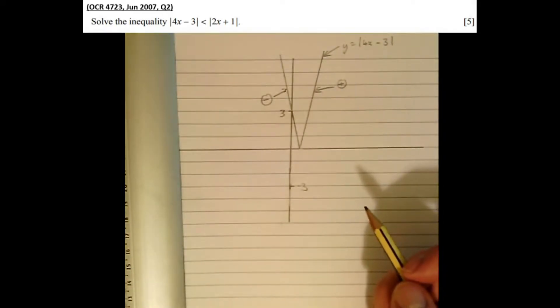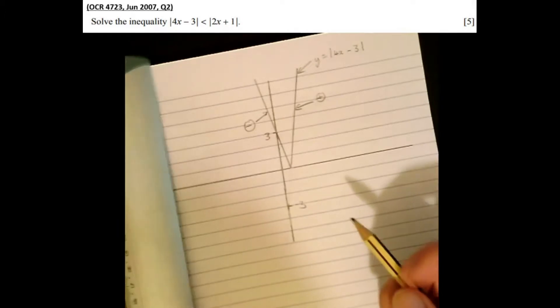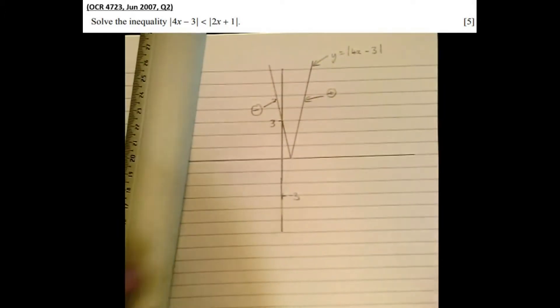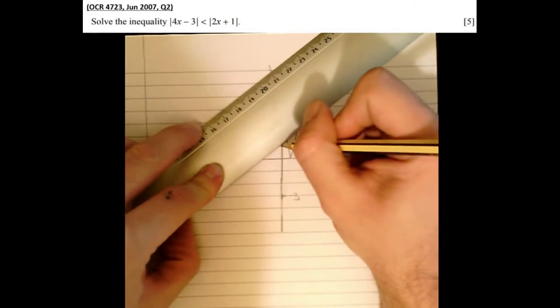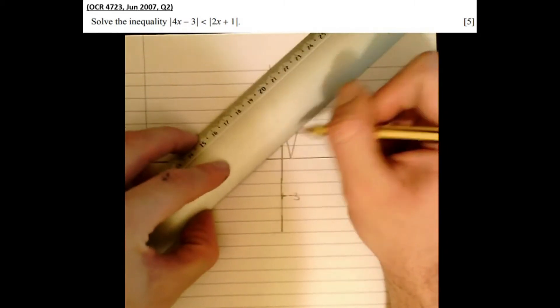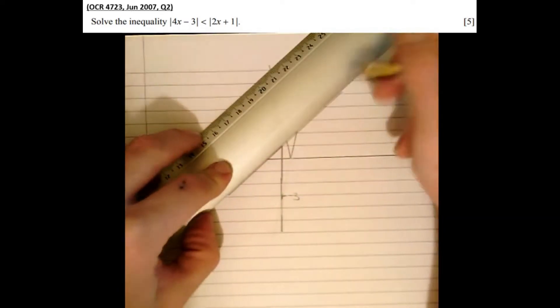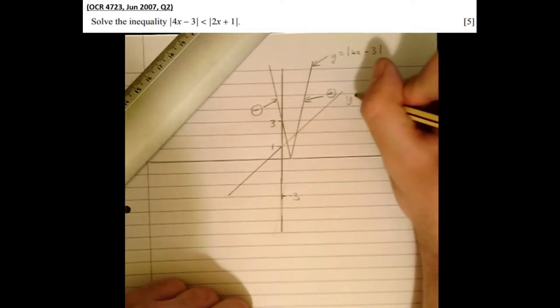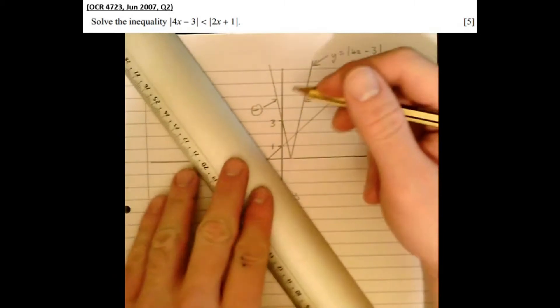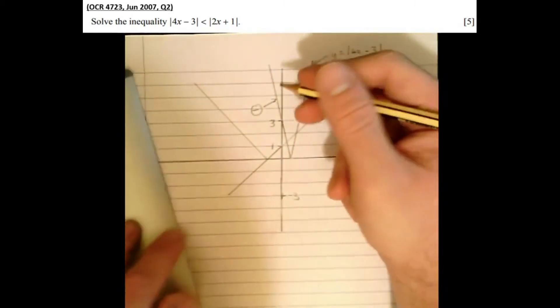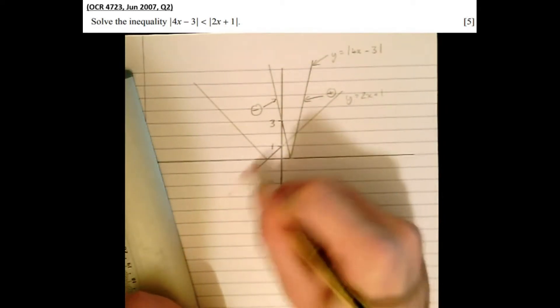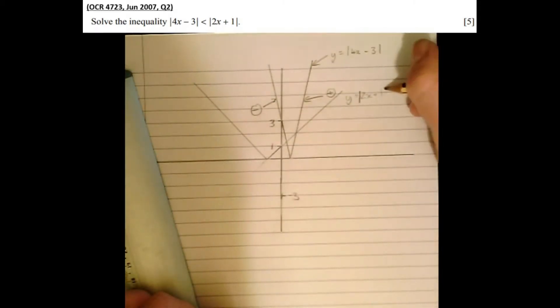Drawing now y equals modulus of 2x plus 1, well the graph crosses here at 1 and has a less steep gradient, in fact half as steep as the previous one. So there's y equals 2x plus 1. But when we modulus it, again we reflect any part of the graph that's below the x-axis, like that. And we'll rub out our original part that was below the axis, now making it the modulus of 2x plus 1.